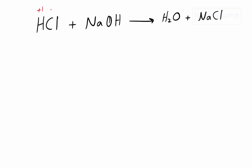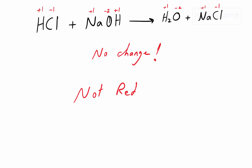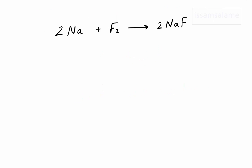The oxidation number for hydrogen is +1, and since chlorine is forming a compound with it, it is -1. Sodium in group one is +1, oxygen is -2. On the other side, H is +1, oxygen is -2, sodium is +1, and chlorine is -1. As you can see, there is no change in the oxidation numbers, so this is not a redox reaction — there are no elements being oxidized or reduced.